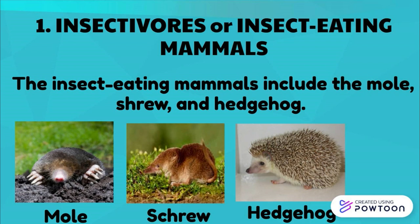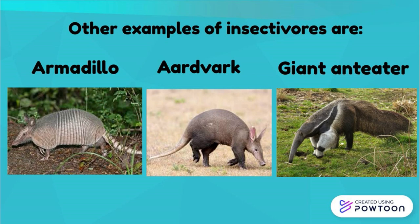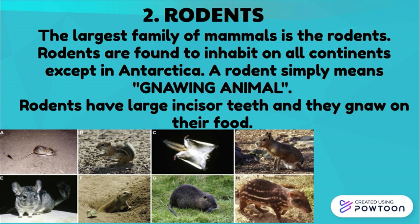Insectivores, or insect-eating mammals, include the mole, shrew, and hedgehog. The mole is blind but able to dig long tunnels in the dirt — it is a burrower that eats grubs and worms. The hedgehog looks like a porcupine with spiky hair and eats insects only. Other examples of insectivores are armadillo, aardvark, and giant anteater.